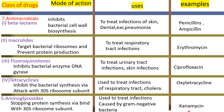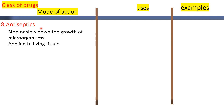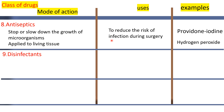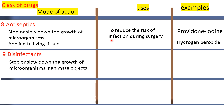Antiseptics kill or slow down the growth of microorganisms on living tissue and are used to reduce the risk of infection during surgery. Examples are iodine and hydrogen peroxide. Disinfectants stop or slow down the growth of microorganisms on inanimate objects. Examples are hydrogen peroxide and chlorine.